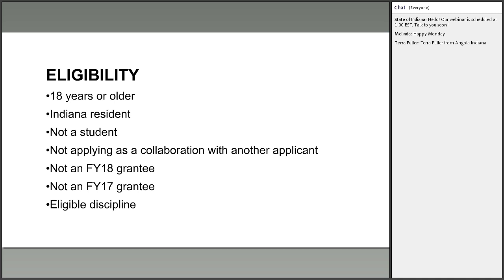You must be 18 or older to apply and must have been an Indiana resident for one year prior to the February 15th deadline. You should plan to remain an Indiana resident throughout the grant period. You may not be a student enrolled in a degree-granting program. IAP projects are for you as an individual, but you'll also be asked to consider your project's public benefit and community engagement.